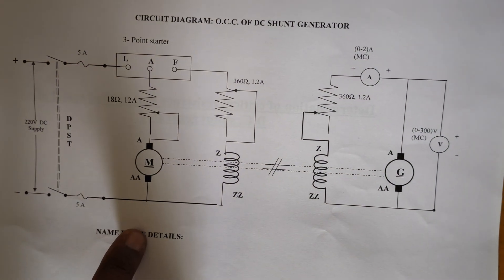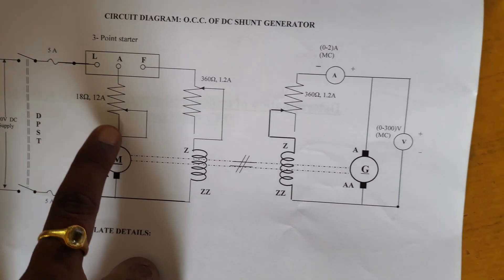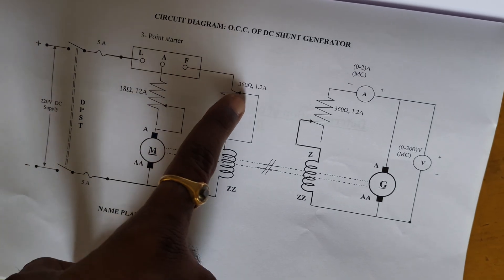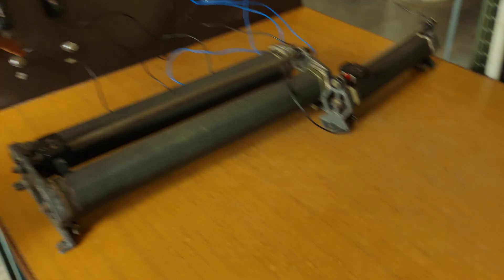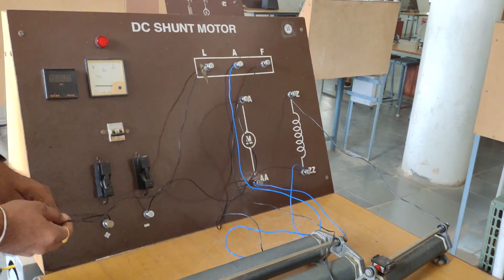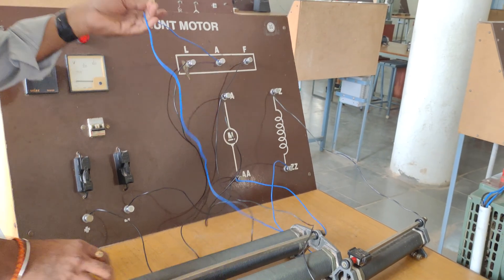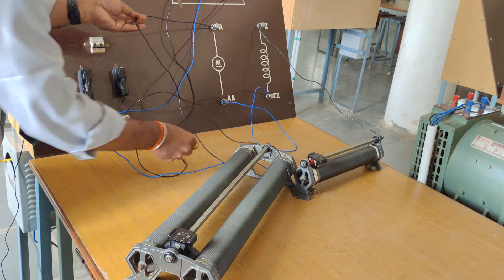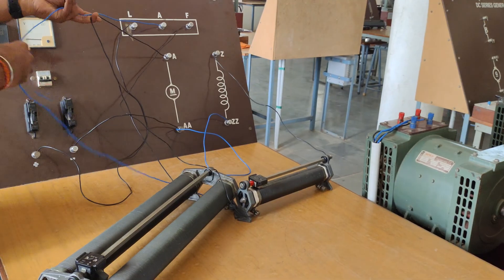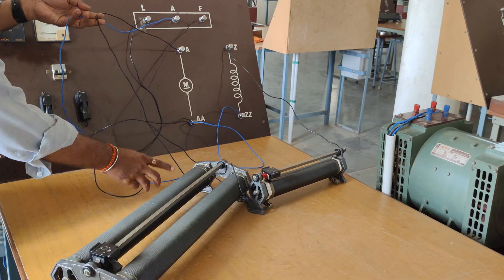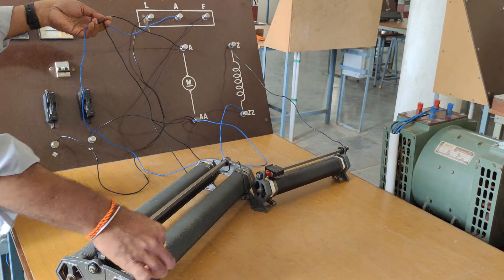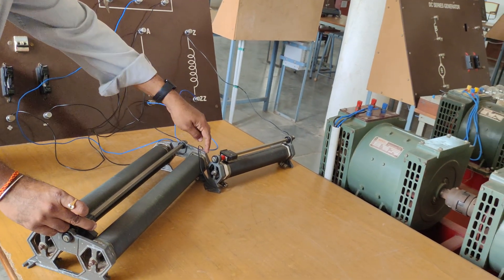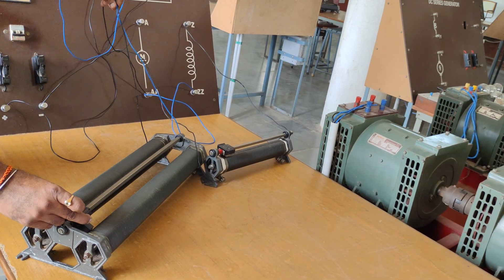Coming to the connections on the motor side, the line is connected to the positive terminal. The armature is connected to one end of the 18 ohms rheostat, and the other armature wire is connected to the other end of the 18 ohms rheostat — this is in the maximum position, meaning the full 18 ohms resistance is in the circuit; current enters here and leaves here. That is why this connection is called the rheostat in maximum position.